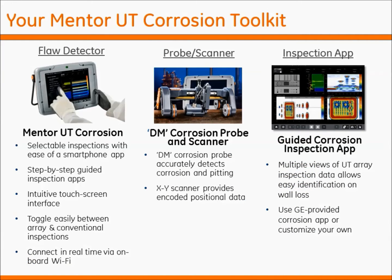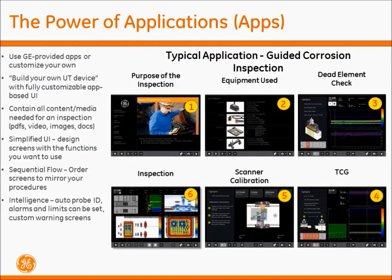Your Mentor UT Corrosion Toolkit includes a flaw detector, a probe and scanner, and a customized inspection app. An inspection app, like a smartphone app, provides all the rich media and features that you need to guide your inspection throughout the process.